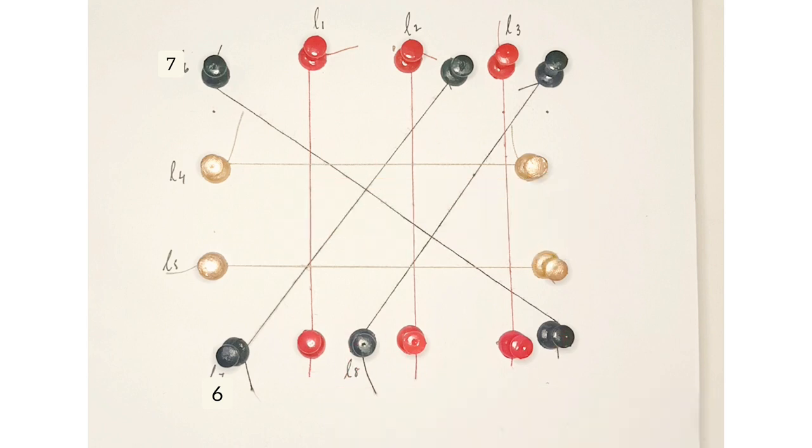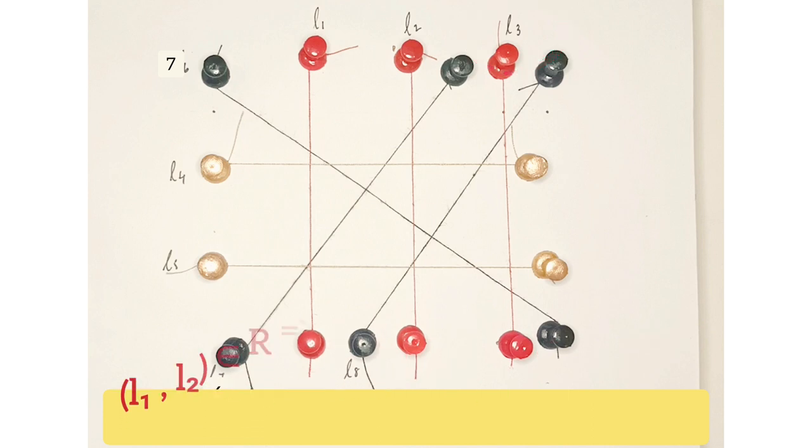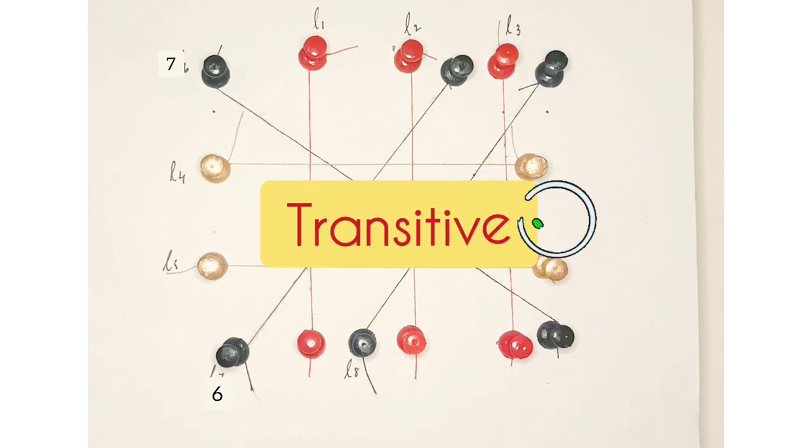Here we see that L1 is parallel to L2 and L2 is parallel to L3, so L1 is parallel to L3. So (L1, L2) belongs to R and (L2, L3) belongs to R, which implies (L1, L3) belongs to R. Thus, the relation R is transitive.